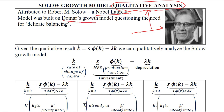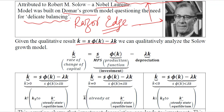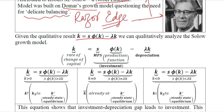Domar's growth model suffered with the lack of delicate balancing because it is not possible to retain the equilibrium in that model. The razor's edge was the situation highlighted — that if macroeconomic equilibrium is achieved, it is near to impossible to achieve it again. However, Solow's growth model presents an optimistic picture of macroeconomic equilibrium. We are now going to look at its equation, which is derived by using various pieces of information.